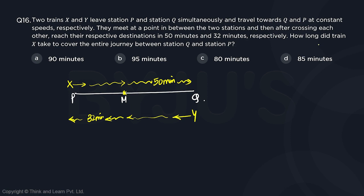Now, the question is, how long did train X take to cover the entire journey between station Q and station P? So we need to find out how much time did X take to go from P to M?